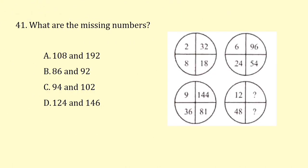What are the missing numbers? The pattern: 2×4=8, 2×9=18, 2×16=32; 6×4=24, 6×9=54, 6×16=96; 9×4=36, 9×9=81, 9×16=144; 12×4=48, 12×9=108, 12×16=192. Answer is option A.